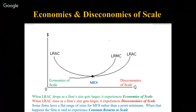I show minimum efficient scale as a point minimum, but in reality some market structures have a flat-bottom minimum instead. If the bottom were long and flat, we would say the firm is experiencing constant returns to scale — neither economies nor diseconomies of scale. Sometimes there are multiple sizes that result in a minimum efficient scale. Two market structures are likely to have them; two others are not.